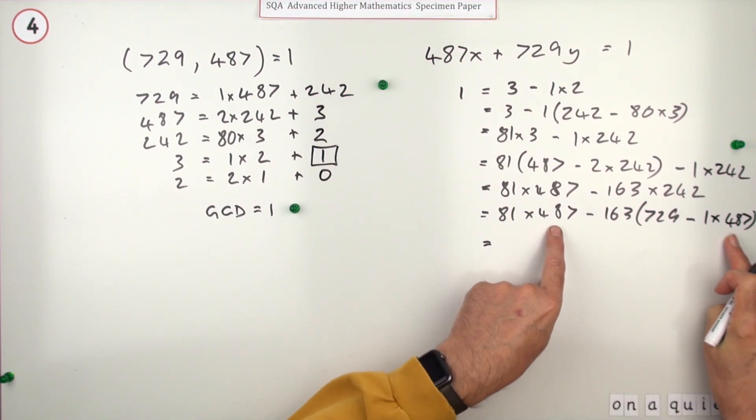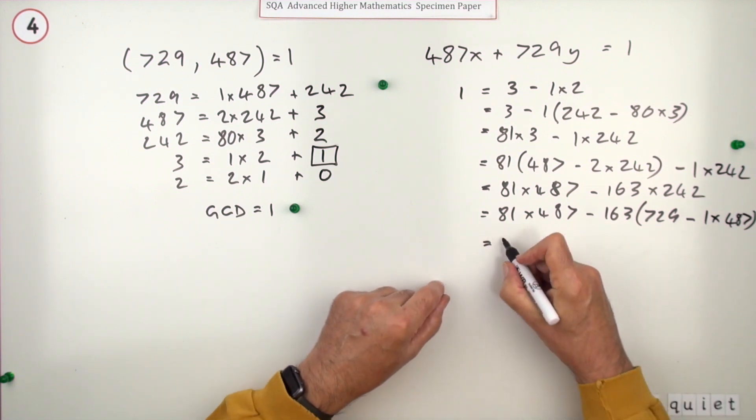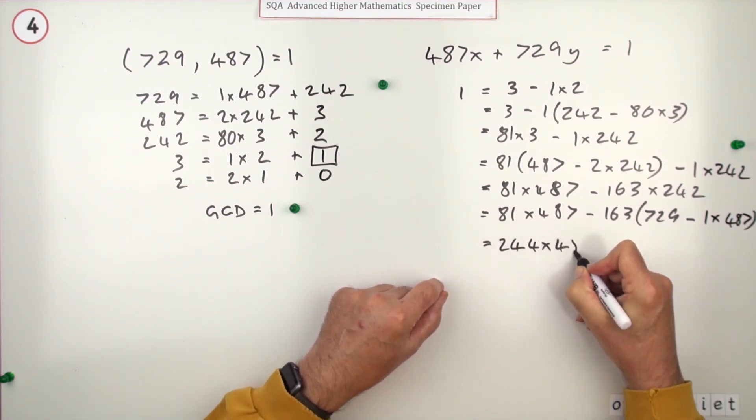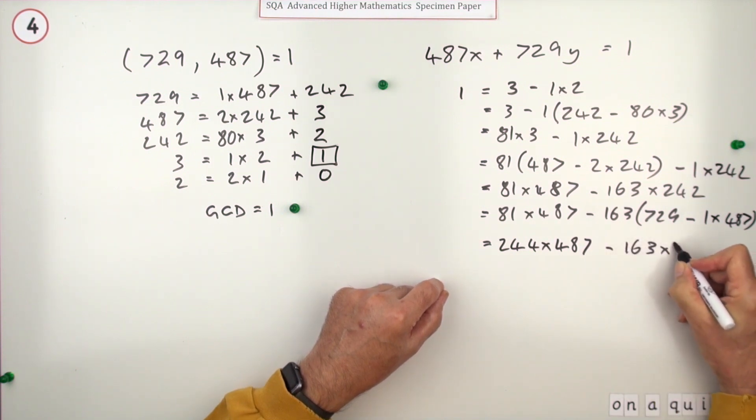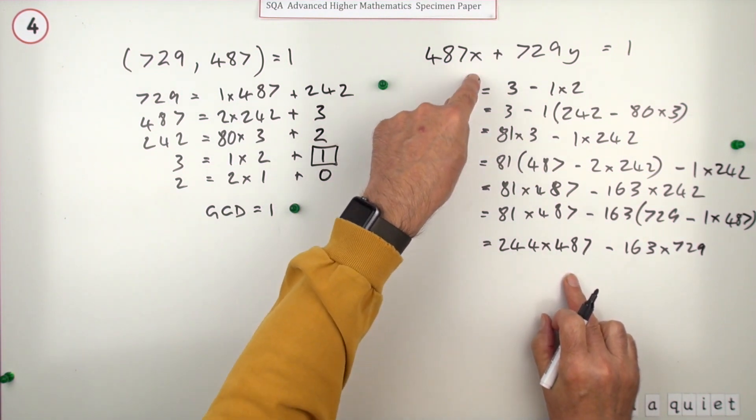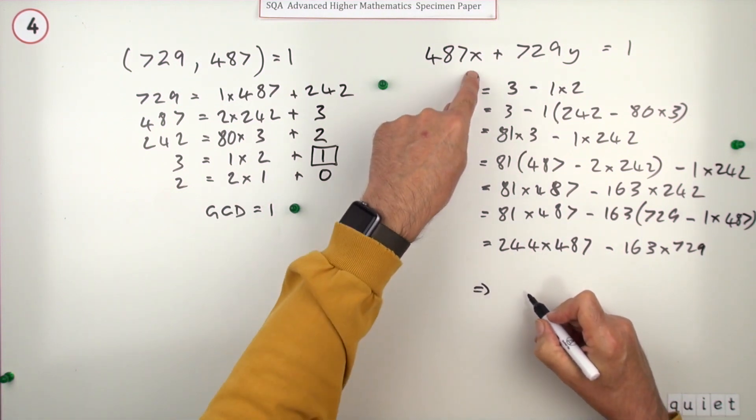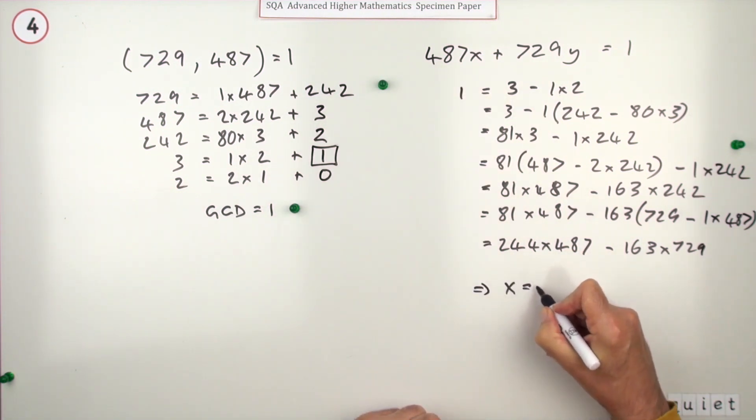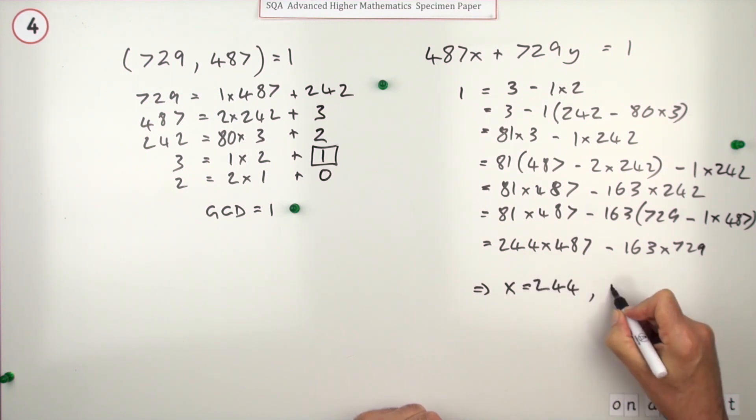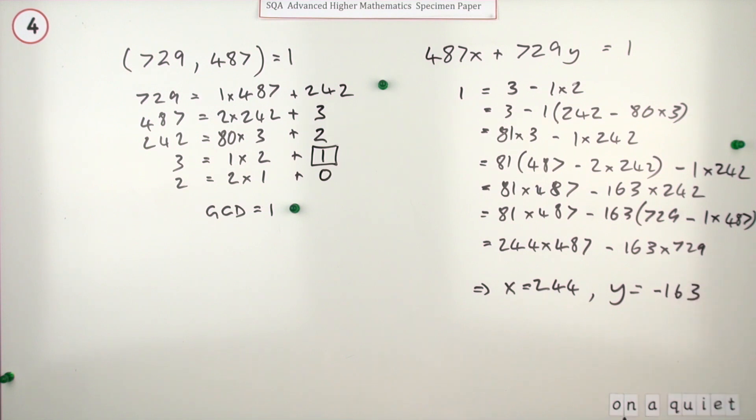So all together for the 487s that's plus 163, so that'll be 244 lots of 487 minus 163 lots of 729. That's the answer then. What was x and y? Comparing it to this, that means x was the multiple of this, which is 244, and y - notice it's got plus y - so y is going to be -163.